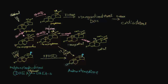In zona fasciculata reticularis, 17-alpha-hydroxylase carries out reactions ending in cortisol or androgen production. Insignificant amounts of DOC and corticosterone with salt-retaining activity are also produced here, unlike in zona glomerulosa where the pathway continues beyond corticosterone via aldosterone synthase to produce aldosterone.